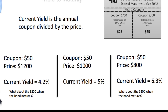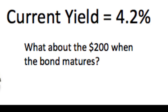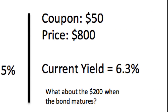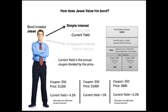If Jesse bought this bond for $1,200, the current yield is 4.2%. But what about the $200 he's going to lose when the bond matures? We know whenever a bond matures he only gets $1,000 back — the par value. Current yield does not account for that $200 loss. Likewise, if he buys the bond at $800, when the bond matures it will be worth $1,000 — a $200 profit that isn't calculated into the current yield. That's where yield to maturity comes into play.